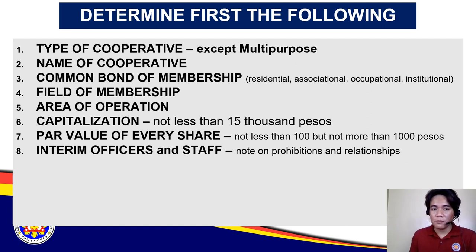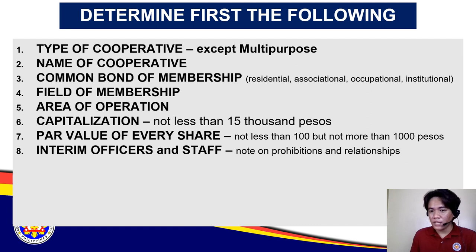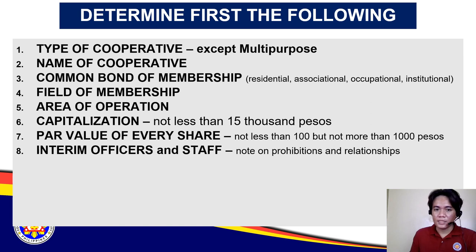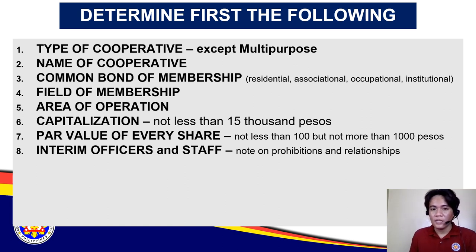You should also decide who among those who attended the pre-registration seminar will be your interim officers — the members of the board of directors, members of the committees, staff and employees, general manager, treasurer, bookkeeper, and cashier. They are interim only, for the purpose of registration. But once registered, you are required to hold an election to choose the official officers of your cooperative.